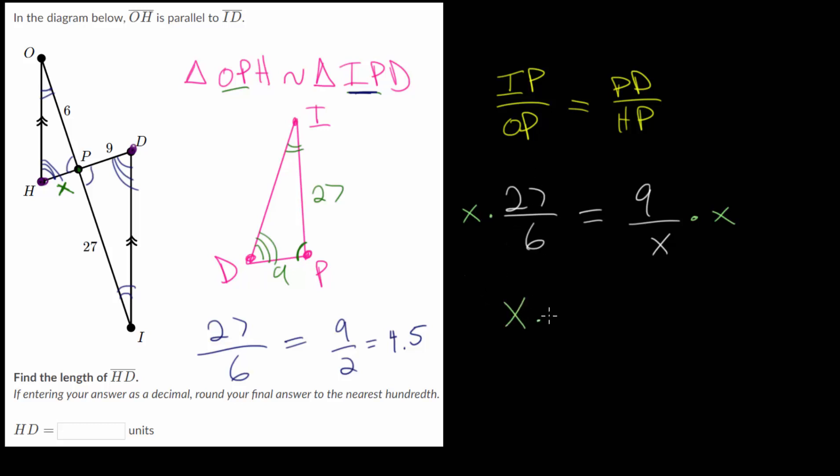So we have X multiplied by 9 over 2 is 9. And if we solve for X, we can just multiply by the reciprocal of this fraction. We can multiply both sides by 2 over 9. And on the left-hand side,